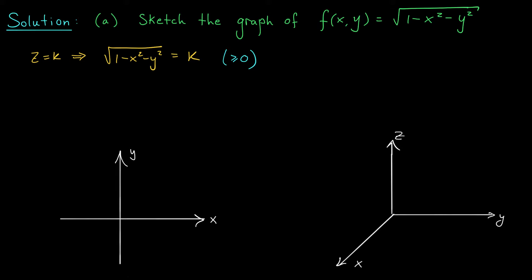Let's clean this up a bit. By squaring both sides I get 1 minus x squared minus y squared is equal to k squared. And after a little rearranging we can write this as x squared plus y squared equals 1 minus k squared. Hopefully you recognize this as the equation of a circle.